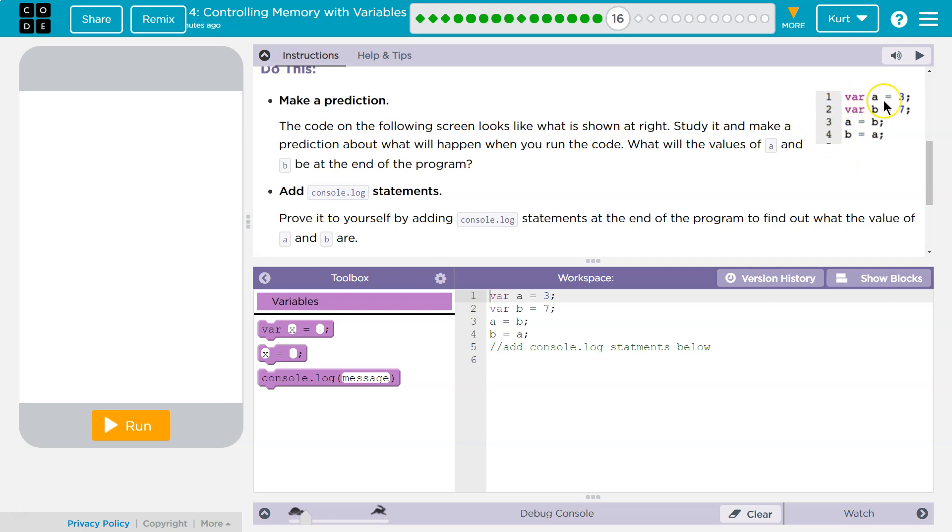Alright, var a is equal to 3, var b is equal to 7. So if var b is equal to 7, okay, so got it. Now what happens here?